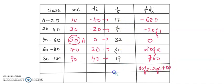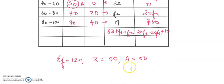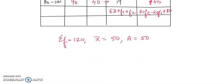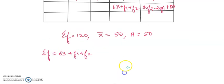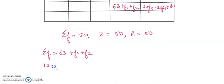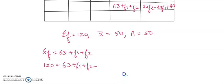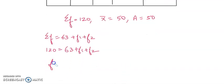Adding the frequencies from the table gives 63 plus F1 plus F2, which equals sigma f. Since sigma f is already given as 120, we write: 63 plus F1 plus F2 equals 120. This gives the first equation: F1 plus F2 equals 57.